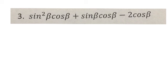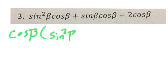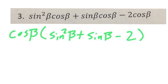Therefore, there's a GCF of cosine beta. So I'm going to factor the cosine beta out. So that's going to give me cosine beta times sine squared beta, plus sine beta, minus 2. So now what is in parentheses is now a trinomial. It is three terms. You can think about this as being like x squared, plus x, minus 2. So can I factor x squared, plus 2x, minus 2? I can.